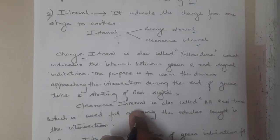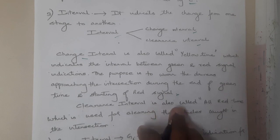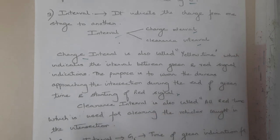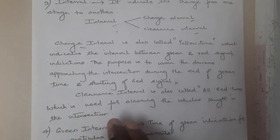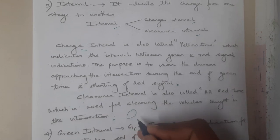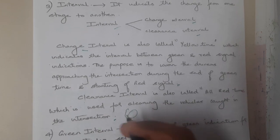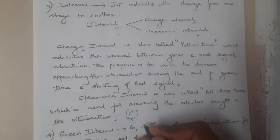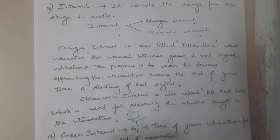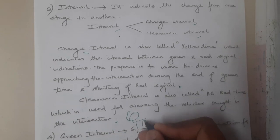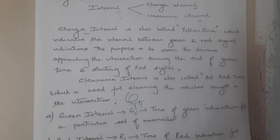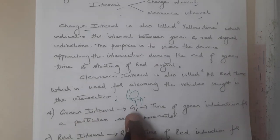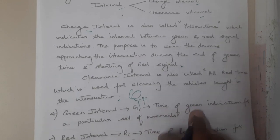Clearance interval is also called all-red time, which is used to clear the vehicles caught in the intersection. Basically, whoever is in the intersection is sent away and the road is closed for that particular time — no one can pass the line during that period. That is the clearance interval.